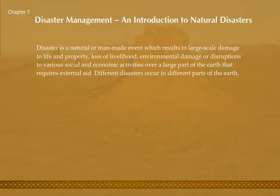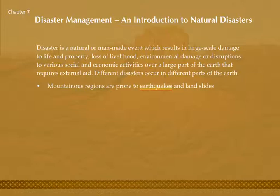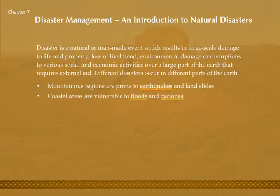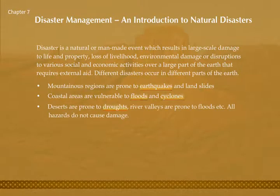Different disasters occur in different parts of the earth. Mountainous regions are prone to earthquakes and landslides. Coastal areas are vulnerable to floods and cyclones. Deserts are prone to droughts. River valleys are prone to floods, etc.